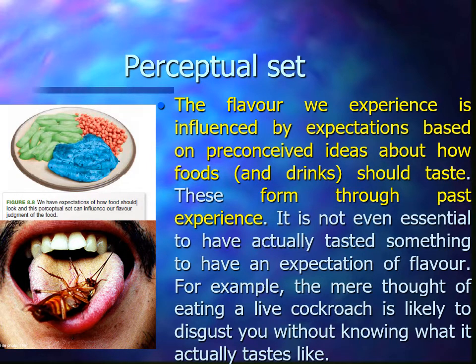This relates to perceptual set: the flavor we experience is influenced by expectations based on preconceived ideas about how foods and drinks should taste, which form through past experience. What you've eaten as a child will most likely influence what you eat as an adult. It is not even essential to have actually tasted something to have an expectation of that flavor — for example, the mere thought of eating a live cockroach is likely to disgust you without knowing what it actually tastes like.